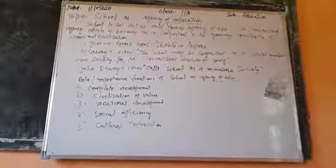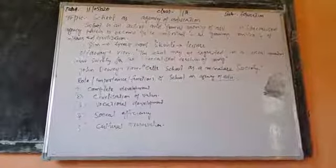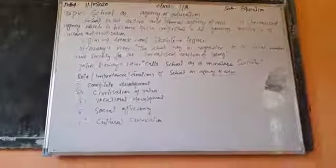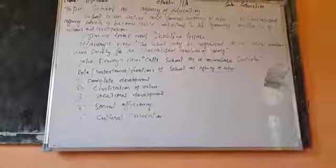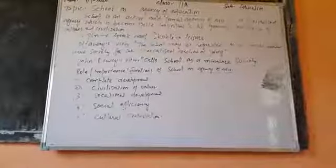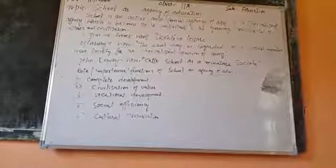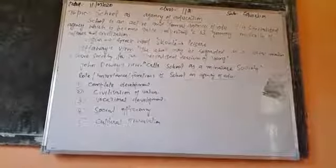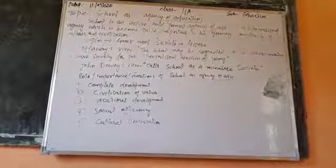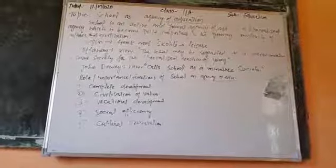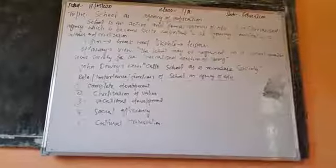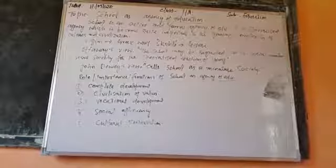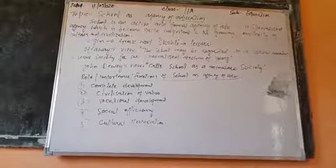Along with being a formal agency of education, school is also an active agency of education. This means there is face-to-face interaction — a two-way communication system — where children interact with teachers face-to-face.